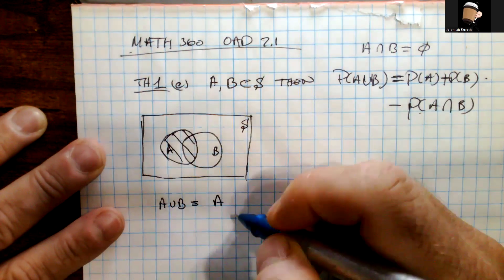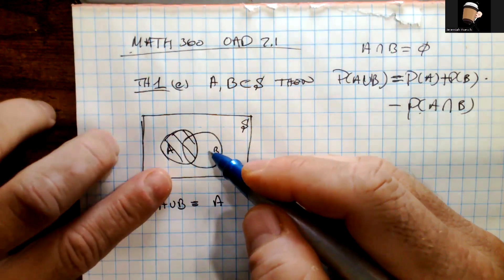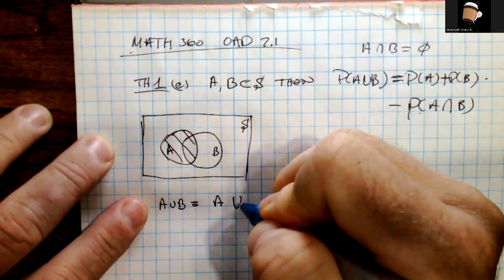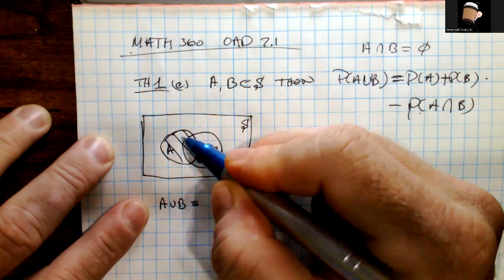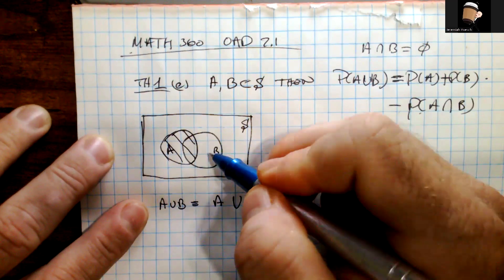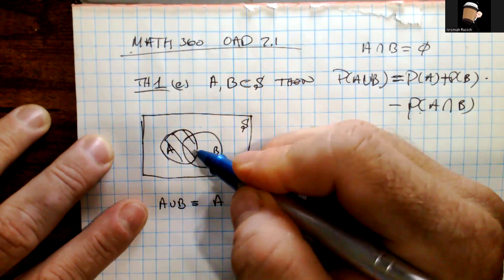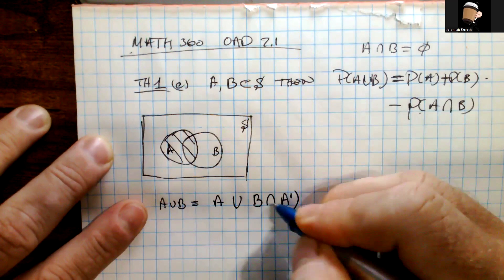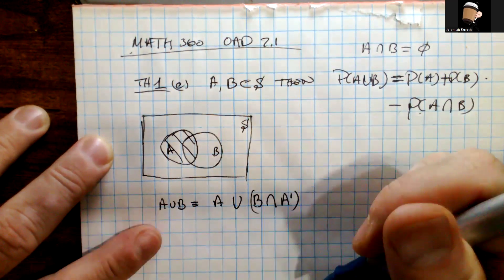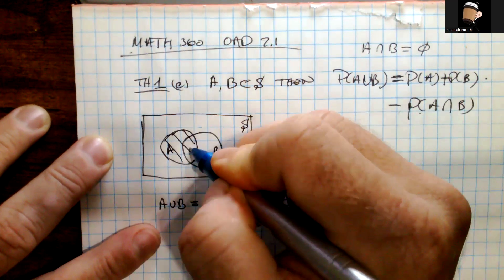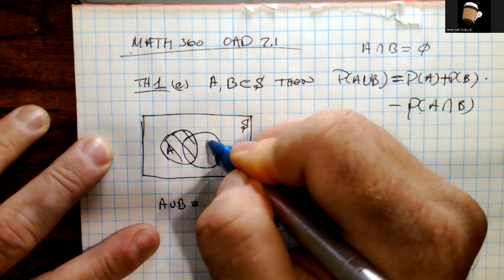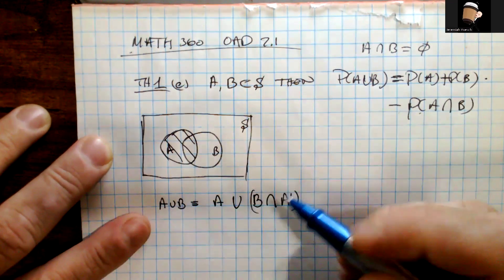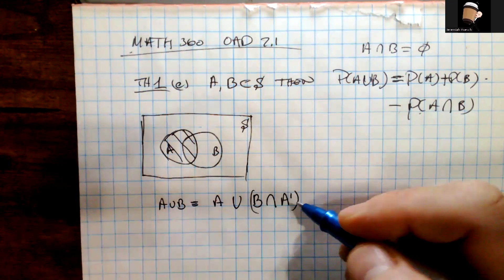One way to do that: take all of A, and then find what's in B but not in A. That section is B intersected with the complement of A. So A ∪ B equals A union (B ∩ A-complement). These are clearly disjoint, which allows us to use property C of the definition of probability.